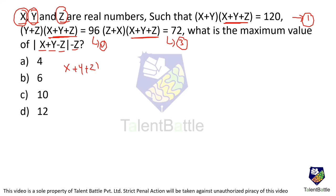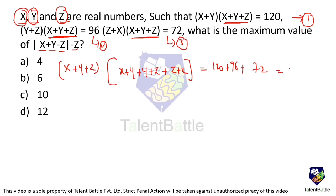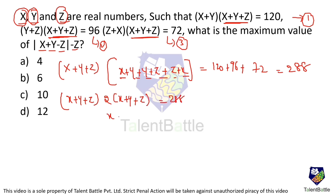Factoring out (x+y+z), the bracketed terms become (x+y) + (y+z) + (z+x) = 2x + 2y + 2z = 2(x+y+z). So (x+y+z)·2(x+y+z) = 120 + 96 + 72 = 288, meaning 2(x+y+z)² = 288, so (x+y+z)² = 144.